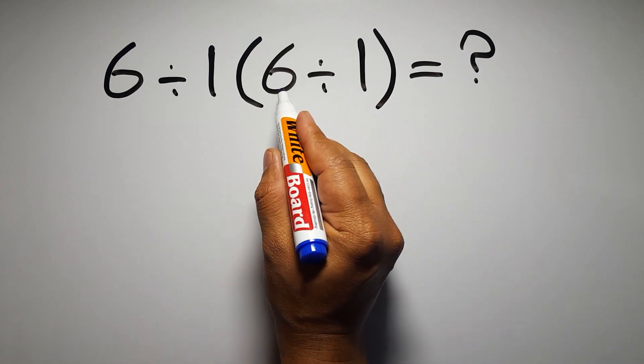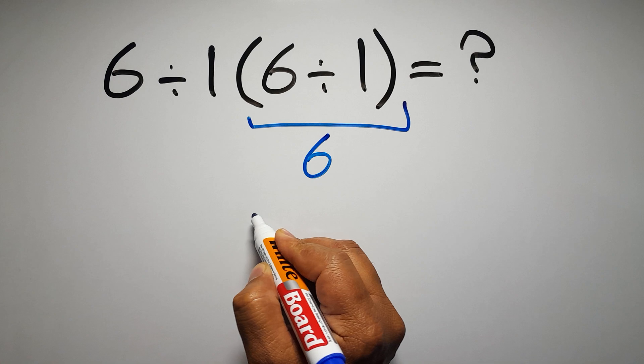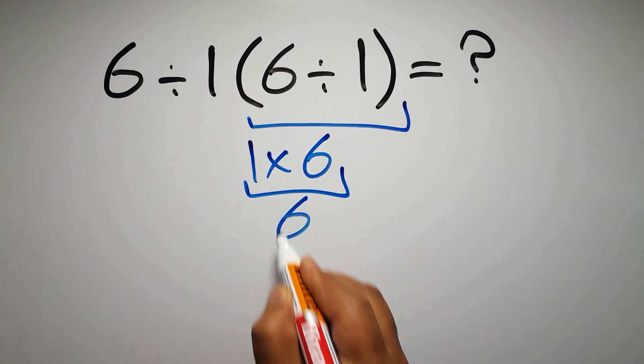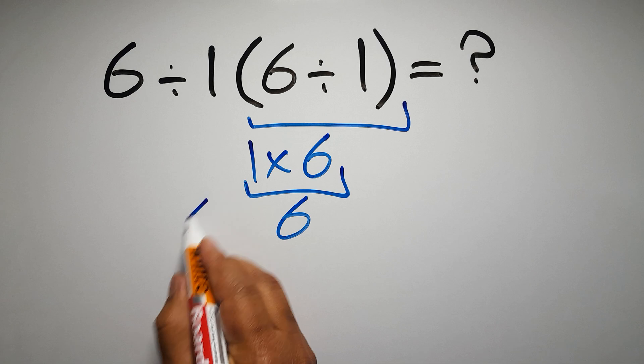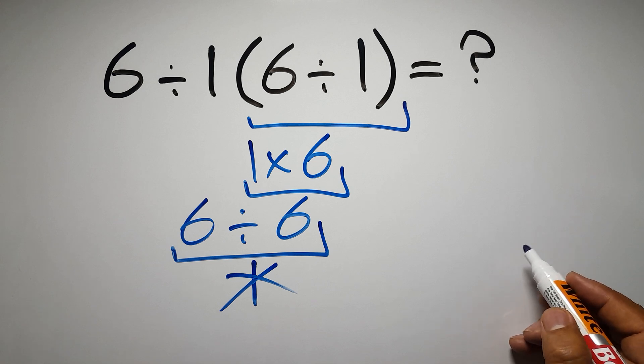Inside these parentheses we have 6 divided by 1 which equals 6, and 1 times 6 gives us 6. So 6 divided by 6 which equals 1, but this answer is not correct because according to the order of operations...